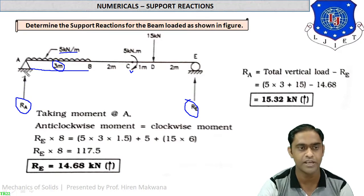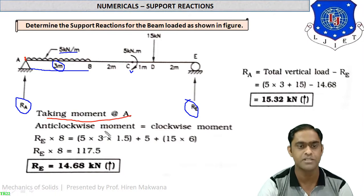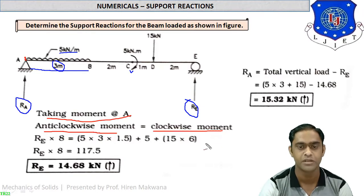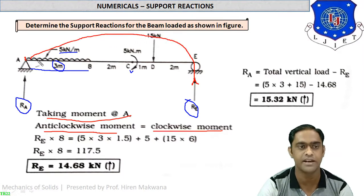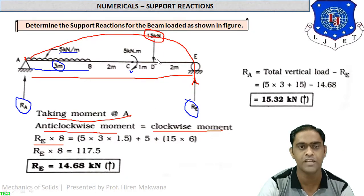As per step 3, we take moments at point A (the left support). Anti-clockwise moment equals clockwise moment — i.e., ΣM = 0 for equilibrium. Starting from the opposite corner: reaction RE acts upward at E, rotating anti-clockwise about A, travelling a distance of 3+2+1+2 = 8 meters. So RE × 8 is the anti-clockwise moment. The point load of 15 kN acts downward, giving a clockwise moment; its distance from A is 3+2+1 = 6 meters.